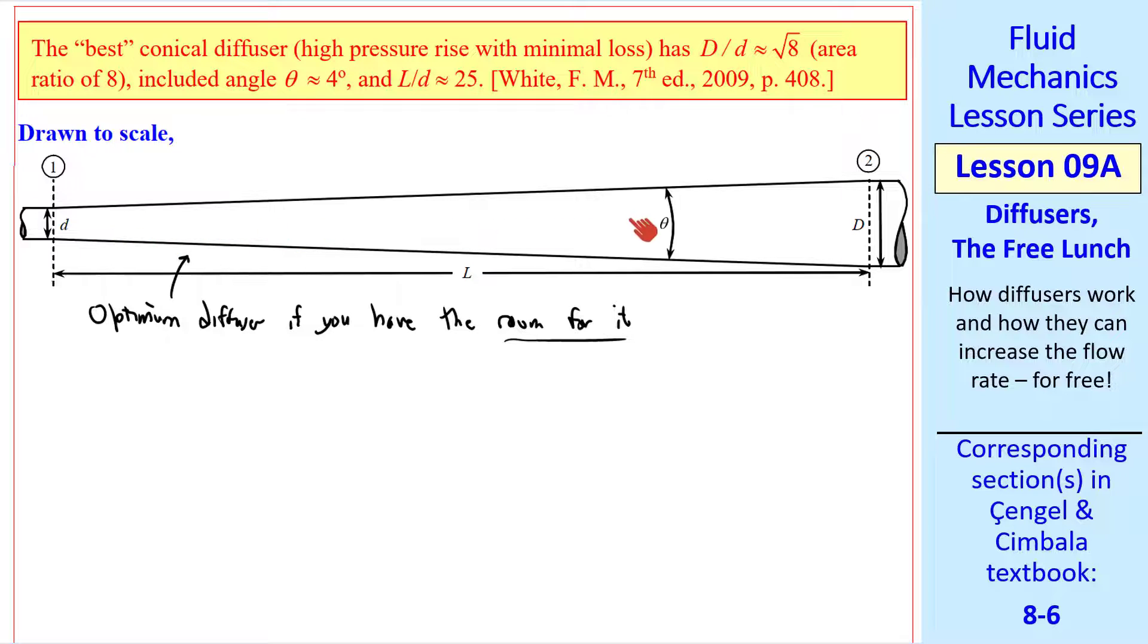In other words, if you have this much length available to you. And creating a diffuser like this would be costly. So typical realistic diffusers have theta of about 10 degrees, rather than 4 degrees, and also a shorter length.